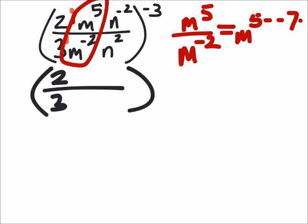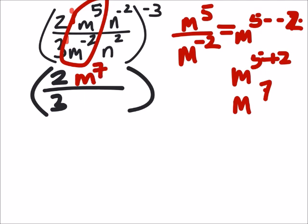Oh, that's supposed to be 2. Well, that would be m to the power of 5 plus 2, which would give us m to the power of 7. And that would go in the numerator because it's not a negative value.